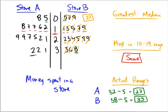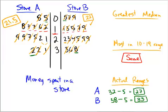For store A on the left, the highest value is 32 and the lowest is 5. Canceling out from top and bottom, we end up needing to find the halfway point between 22 and 21. Halfway between 22 and 21 is 21.5 — just add them together and divide by 2. Since store B's median of 22 is higher than store A's median of 21.5, store B has the highest median.